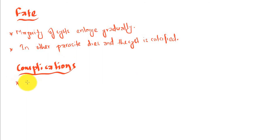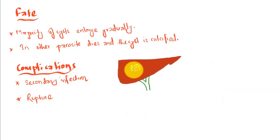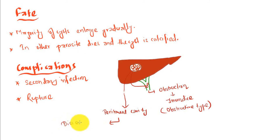Moving on to complications: it can undergo secondary infection. Rupture can lead to blockage of the bile duct causing obstruction and obstructive jaundice. Rupture can also happen in the peritoneal cavity, leading to dissemination of scolices and anaphylactic shock if it reaches the blood vessels.